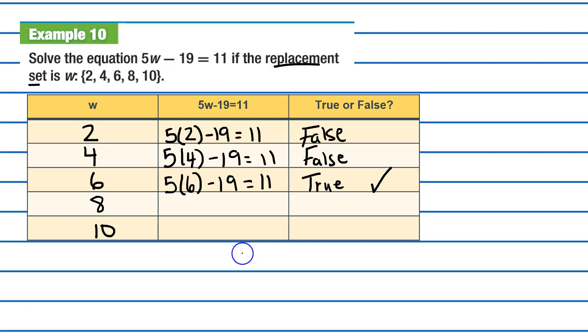I'm going to put a little check as a reminder for myself. So, 5 times 8 minus 19 is equal to 11. 40 minus 19, does that equal 11? Well, that does not. So, we're going to say it's false.